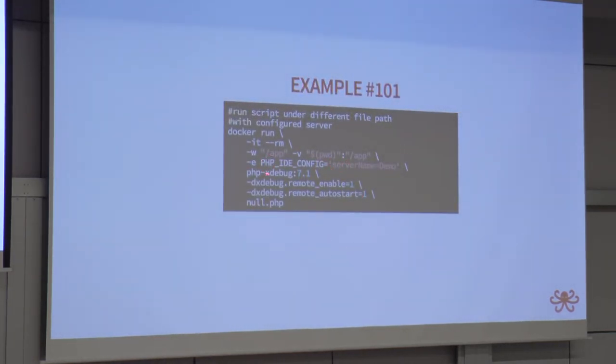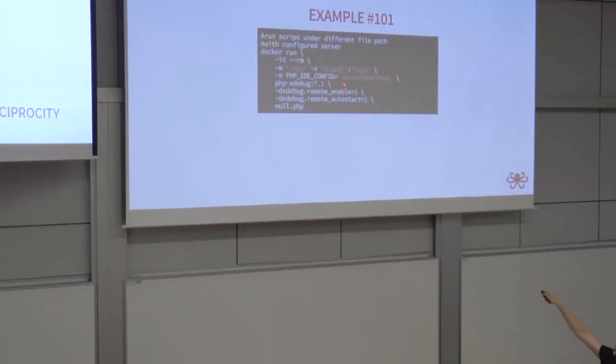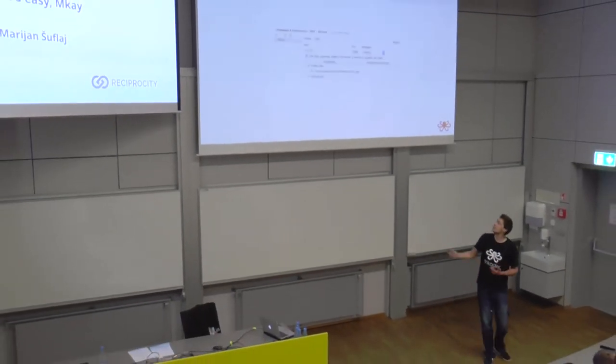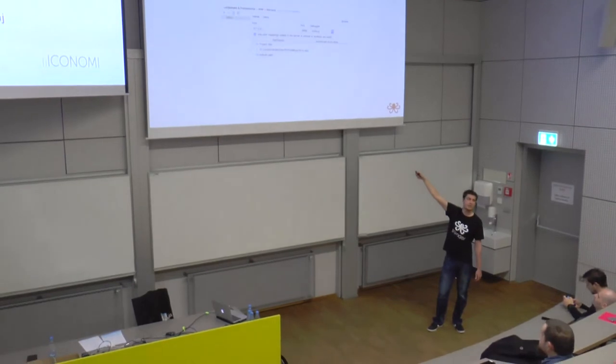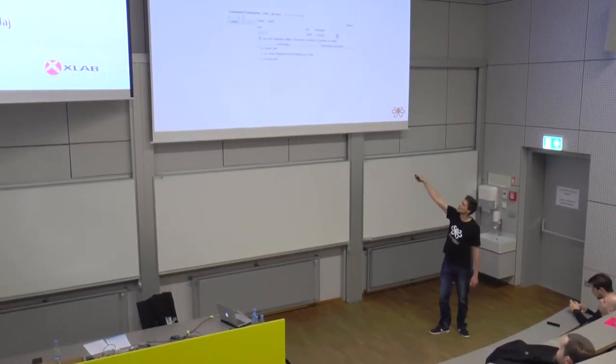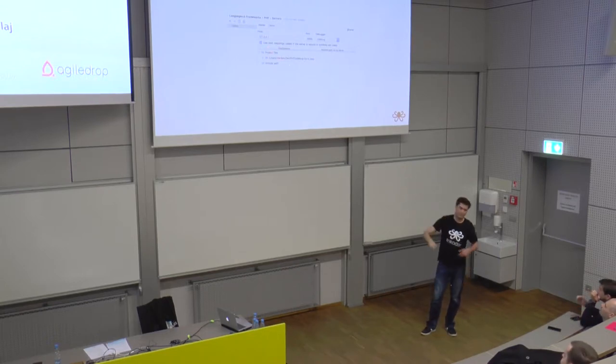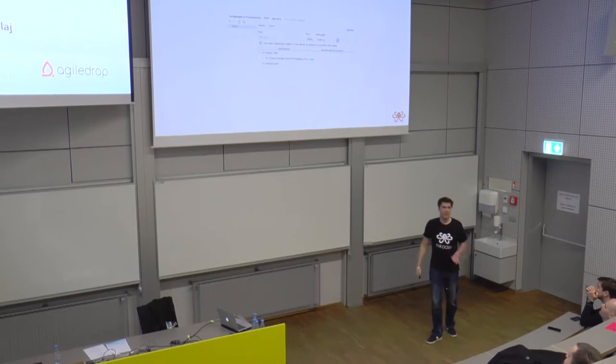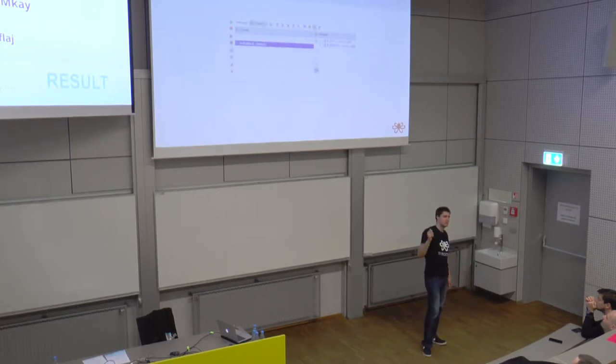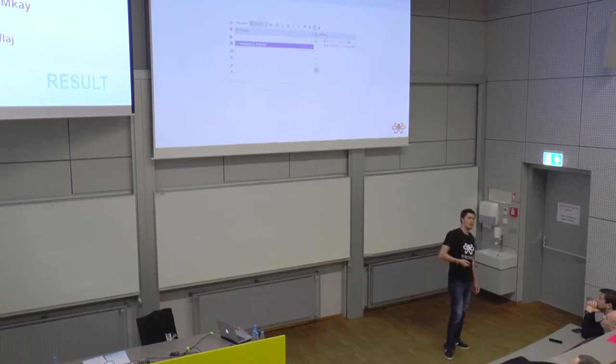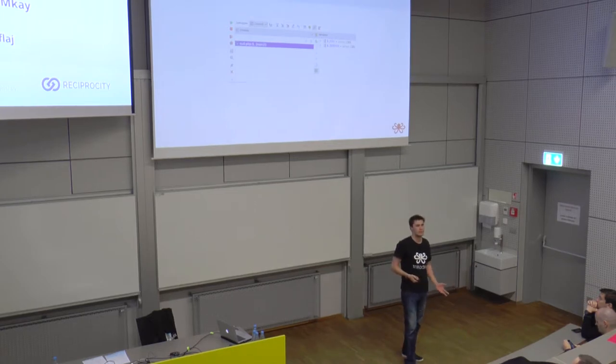The one extra thing we had to add is environment variable PHP_IDE_CONFIG equals server_name equals demo. This server name is configured inside PHPStorm. In language and frameworks, PHP servers, you can create a new server. This name must be the same as the name used here. You will say my project path from the perspective of IDE maps to /app on the server. If your file path differs from the server and your local environment, you will have to configure a server.